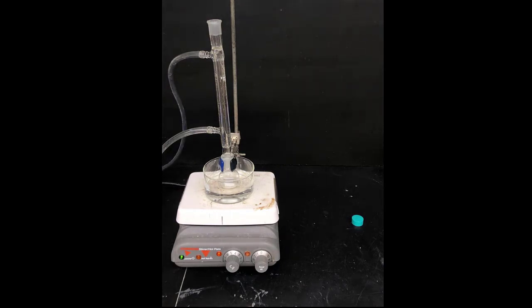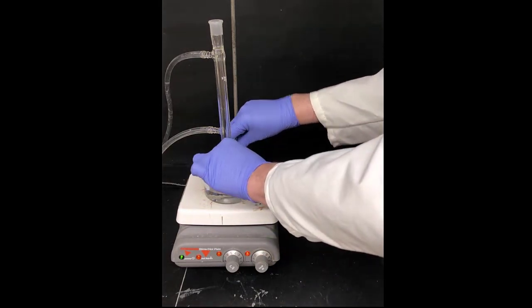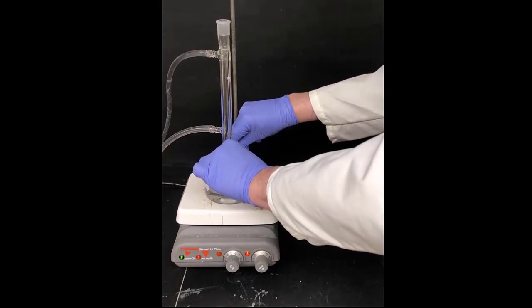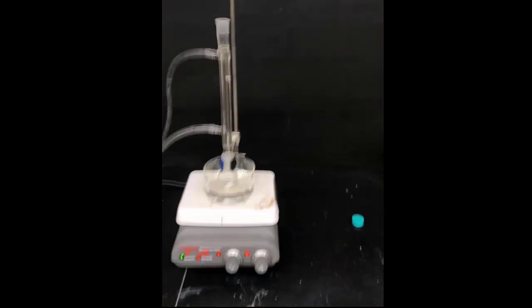The point of a reflux condenser is to keep solvent in the apparatus. In refluxing, we want to make the solution hot to get the reaction to go faster, but we don't want to lose the solvent. The reflux condenser will capture solvent and allow us to keep it in the vessel.